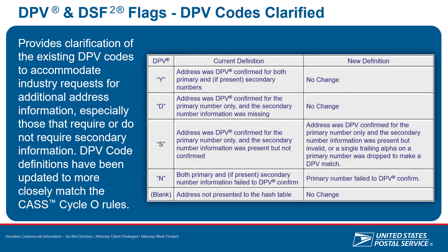A lot of the DPV codes were evaluated to make them more clear and enforce clarification of what they mean. Some stay the same — there was no change to Y, D, and blank. But we did make changes to S and N for more clarity. This presentation will be made available to all of you via the website so you can read in more detail about those new descriptions.